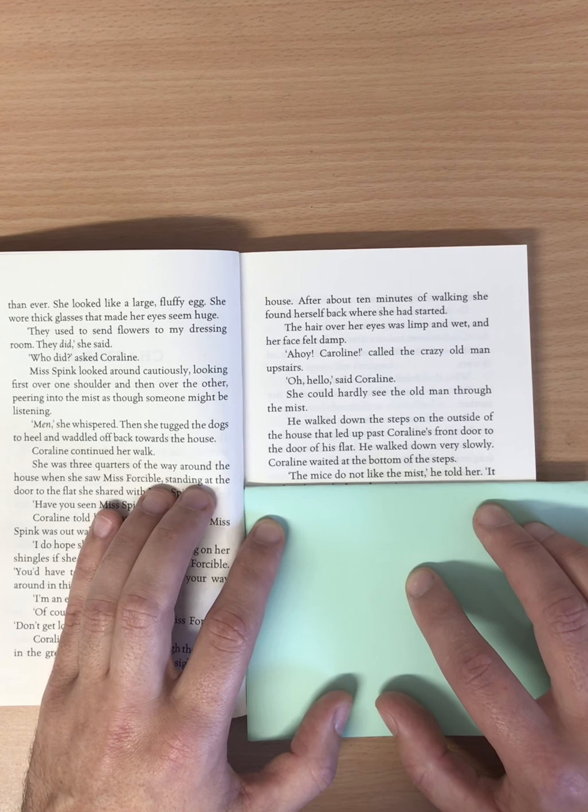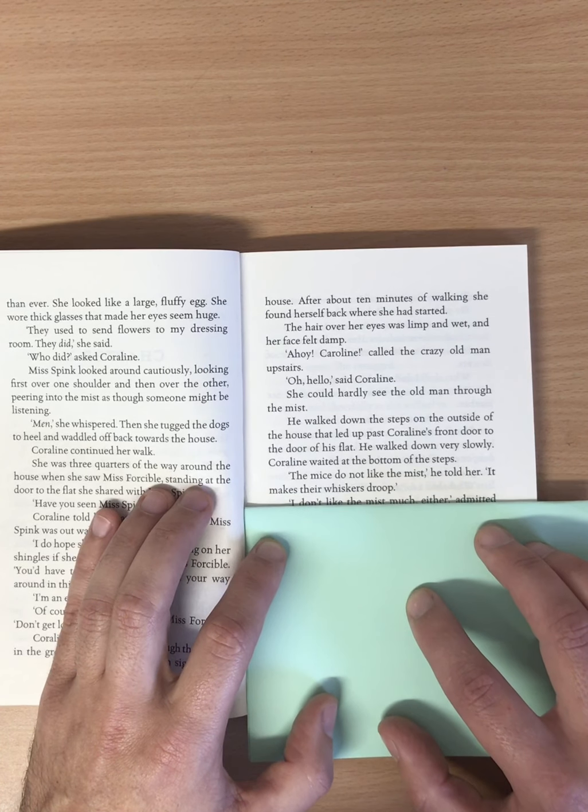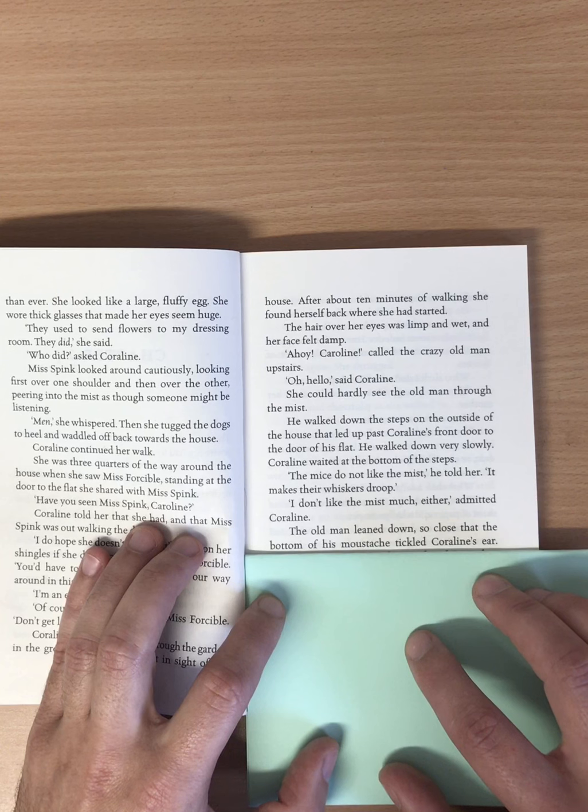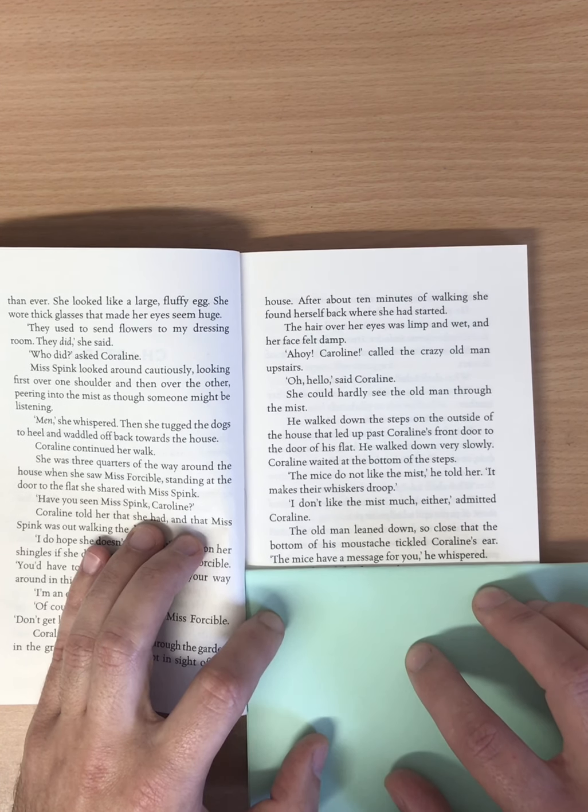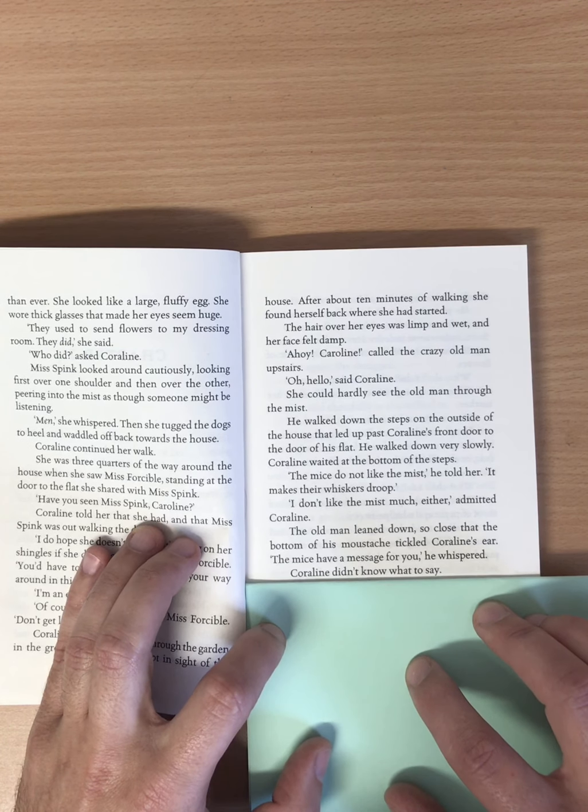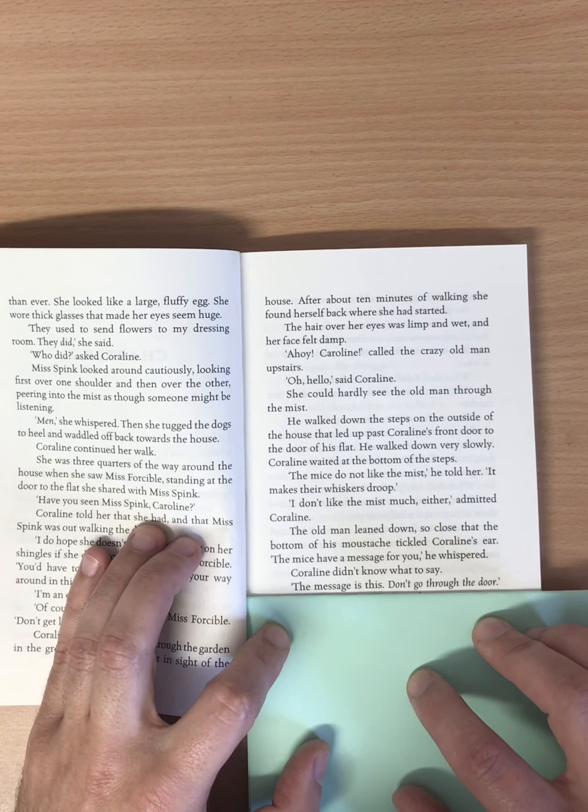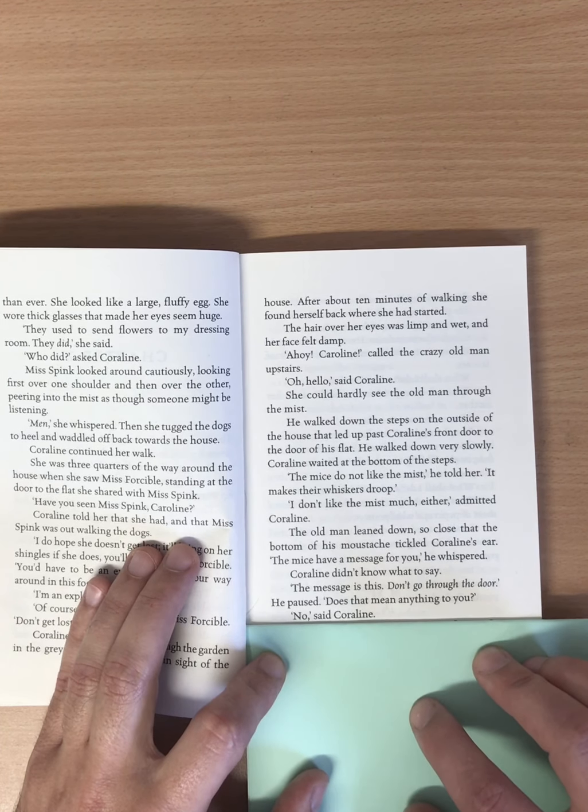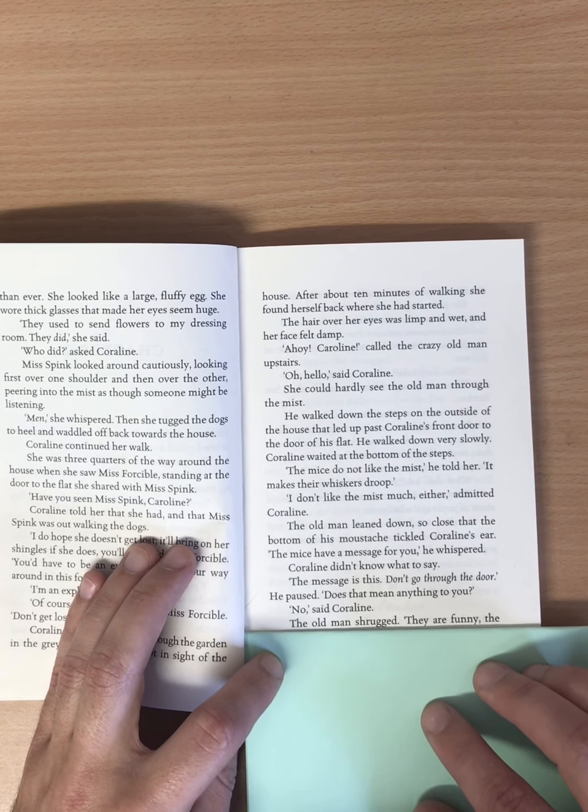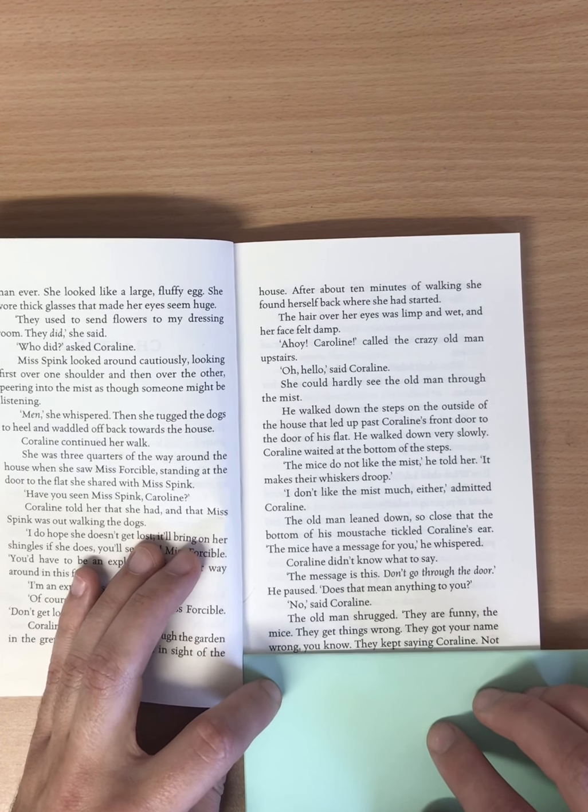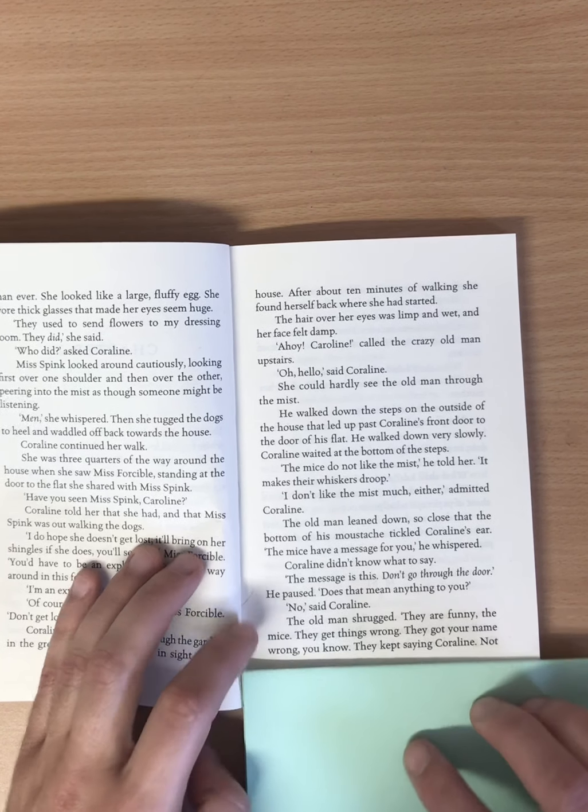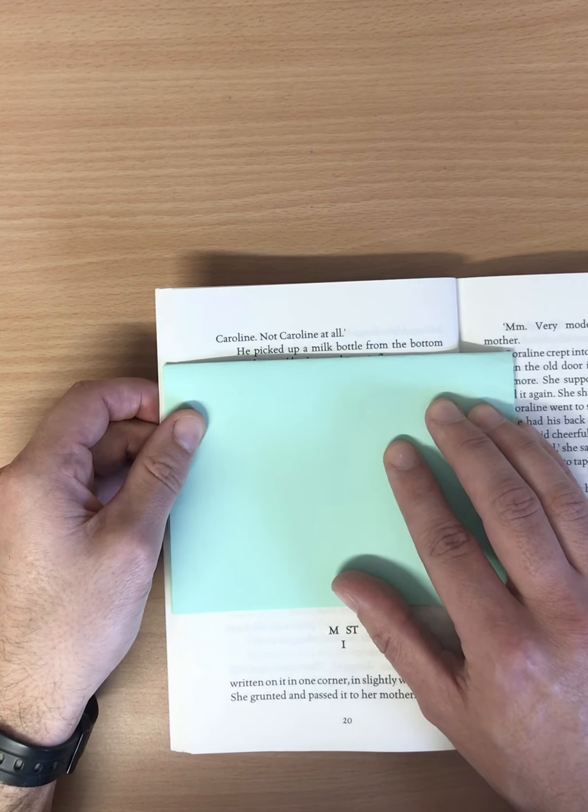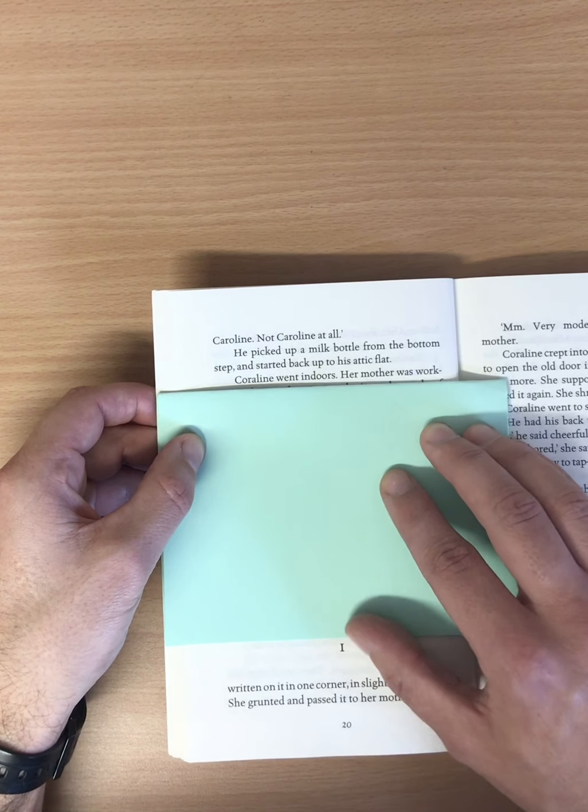The mice do not like the mist, he told her. It makes their whiskers droop. I don't like the mist much either, admitted Coraline. The old man leaned down, so close that the bottom of his moustache tickled Coraline's ear. The mice have a message for you, he whispered. Coraline didn't know what to say. The message is this. Don't go through the door. He paused. Does that mean anything to you? No, said Coraline. The old man shrugged. They are funny, the mice. They get things wrong. They got your name wrong, you know. They kept saying Coraline. Not Caroline. Not Caroline at all. He picked up a milk bottle from the bottom step and started back up to his attic flat. Coraline went indoors.